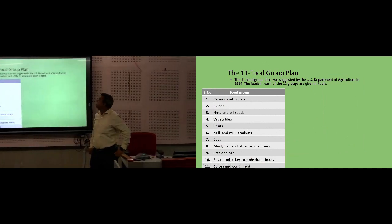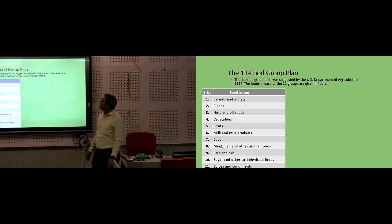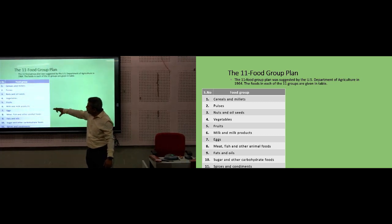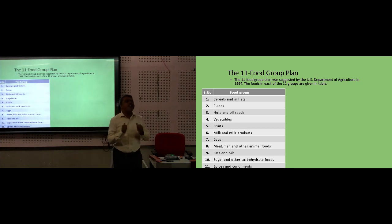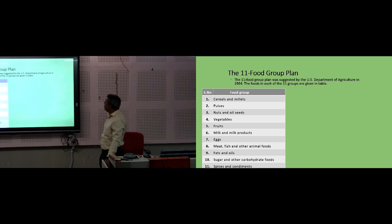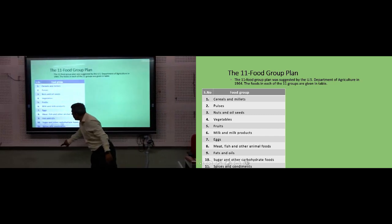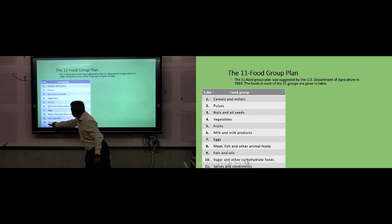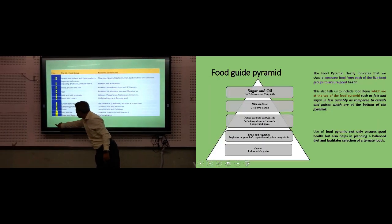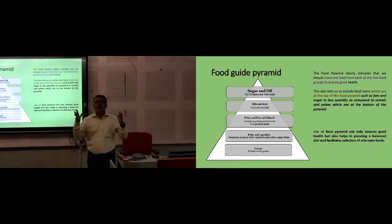The 11-group classification can also be asked in the examination. It was given by the United States Department of Agriculture. These 11 groups include: cereals and millets, pulses, nuts and oil seeds, vegetables, fruits, milk and milk products, egg, meat and fish, fats and oils, sugars and other carbohydrates, and spices and condiments. Spices and condiments are included in the 11-group plan but not in previous ones, as they are known to protect against various diseases.